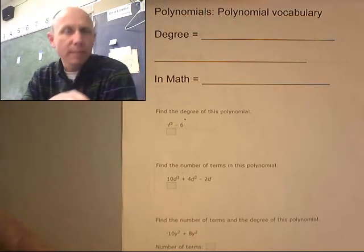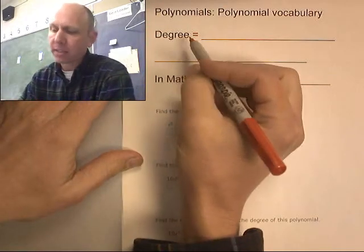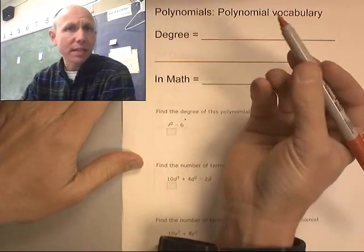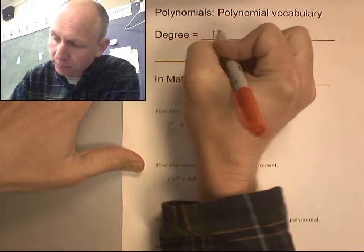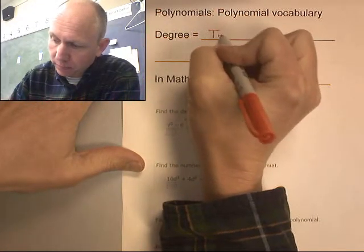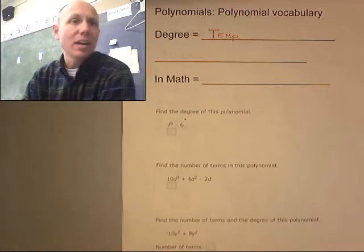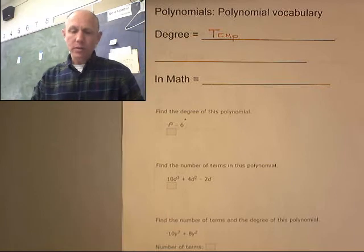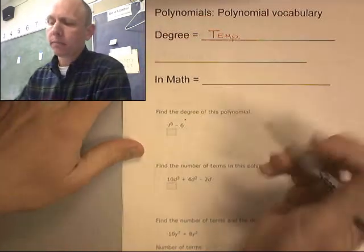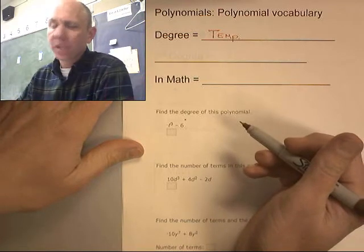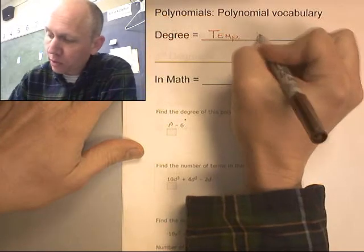Degree. Think about the word degree outside of a math context. Degrees, maybe as a measurement of temperature. Tells us how hot something is or how cold. How about with types of burns? Like a first degree, a second degree, a third degree burn. So burns.